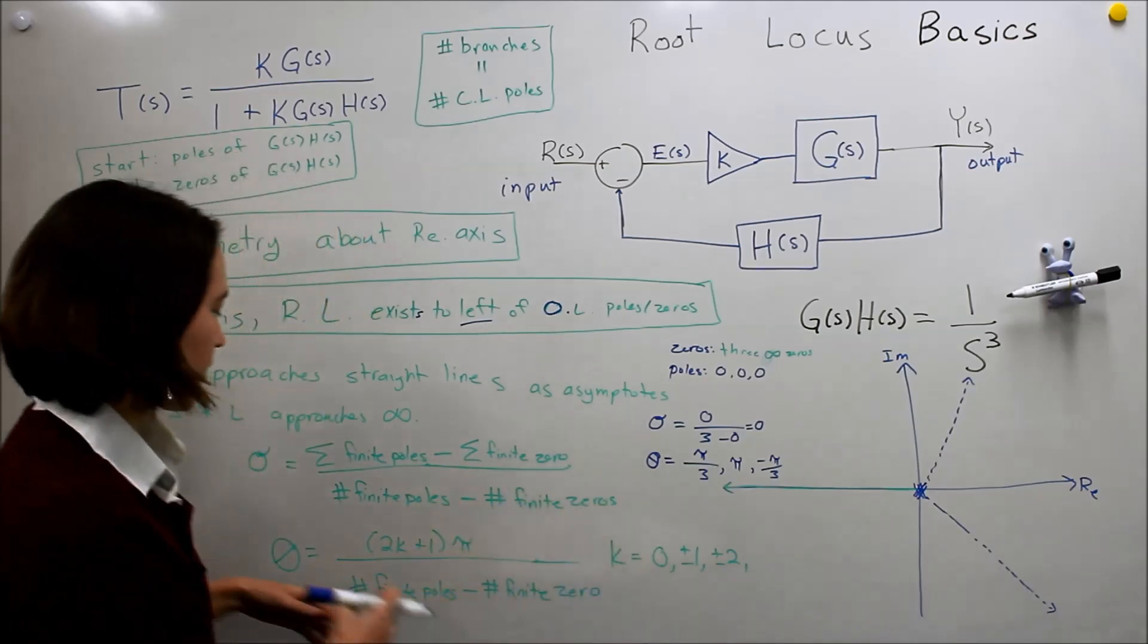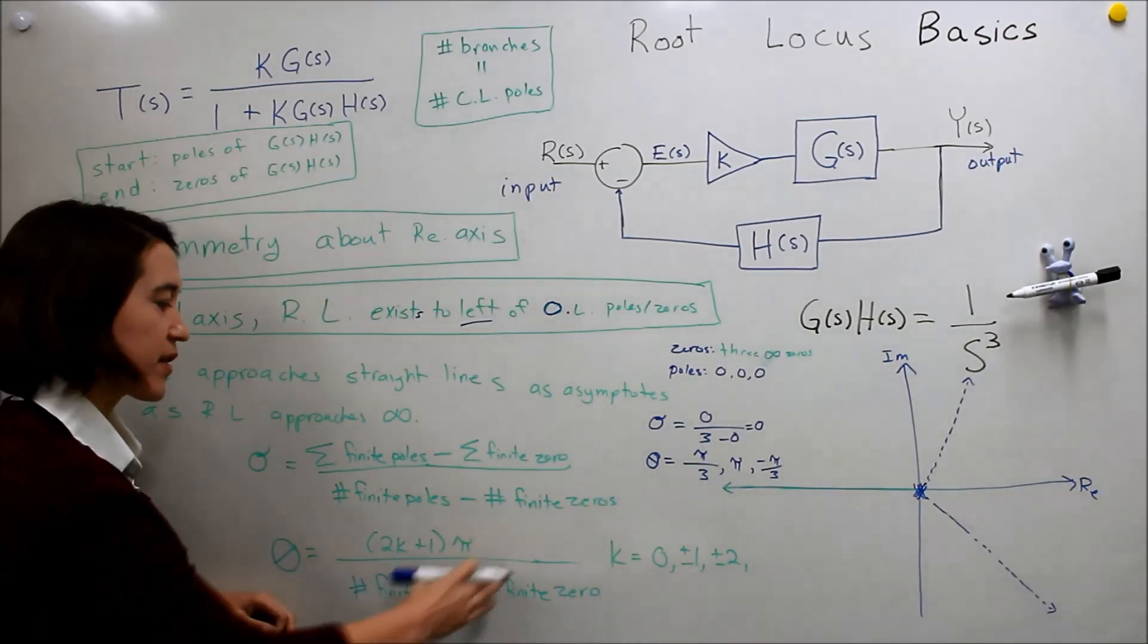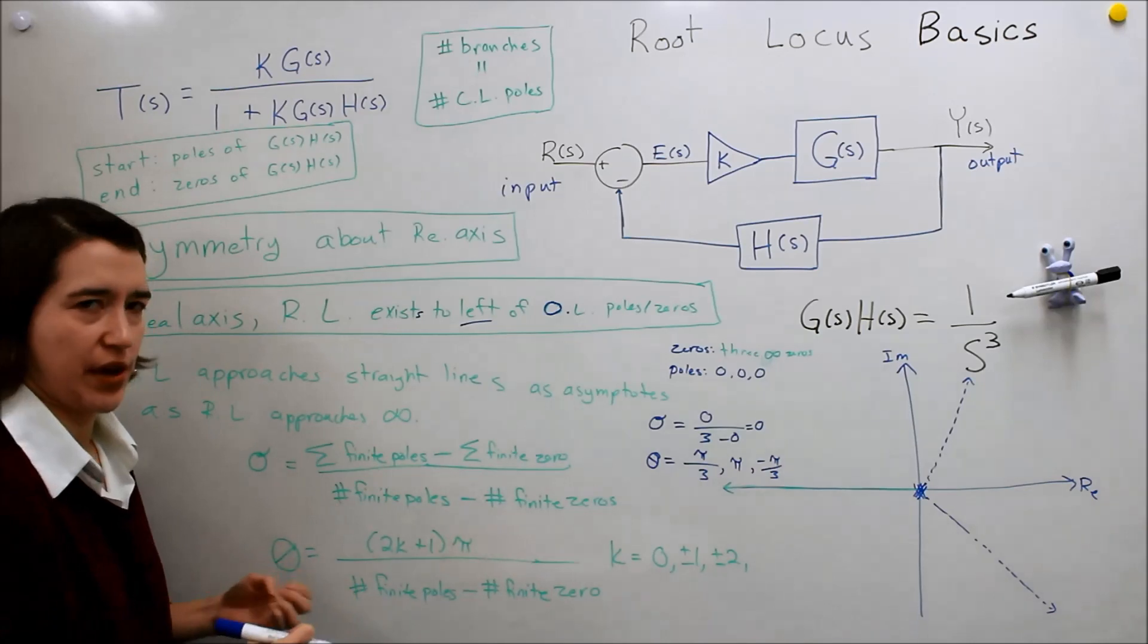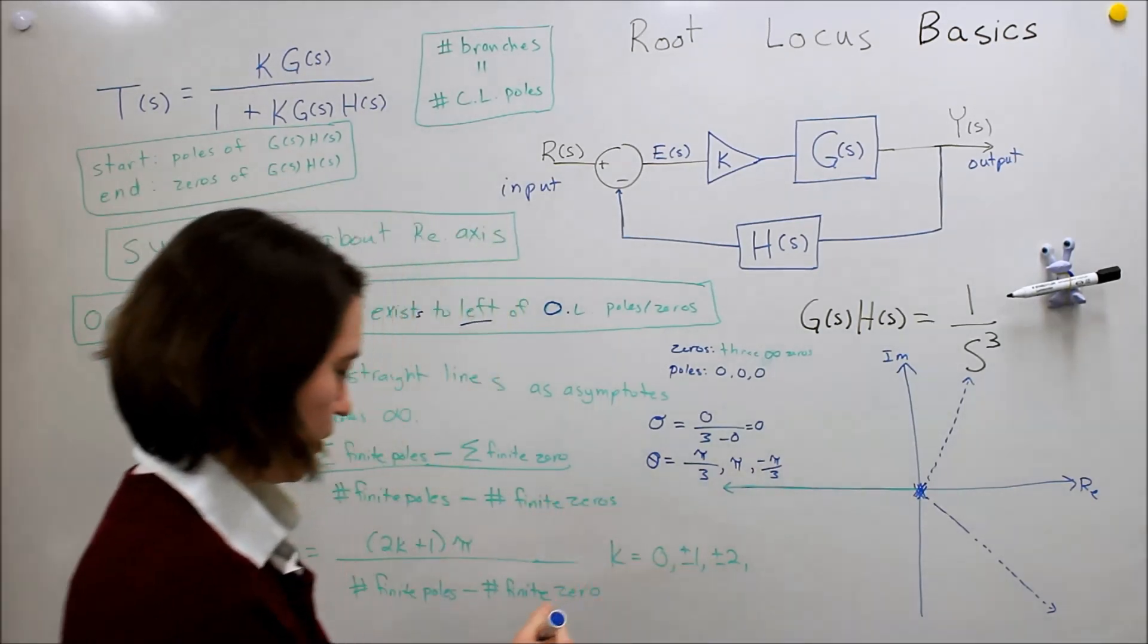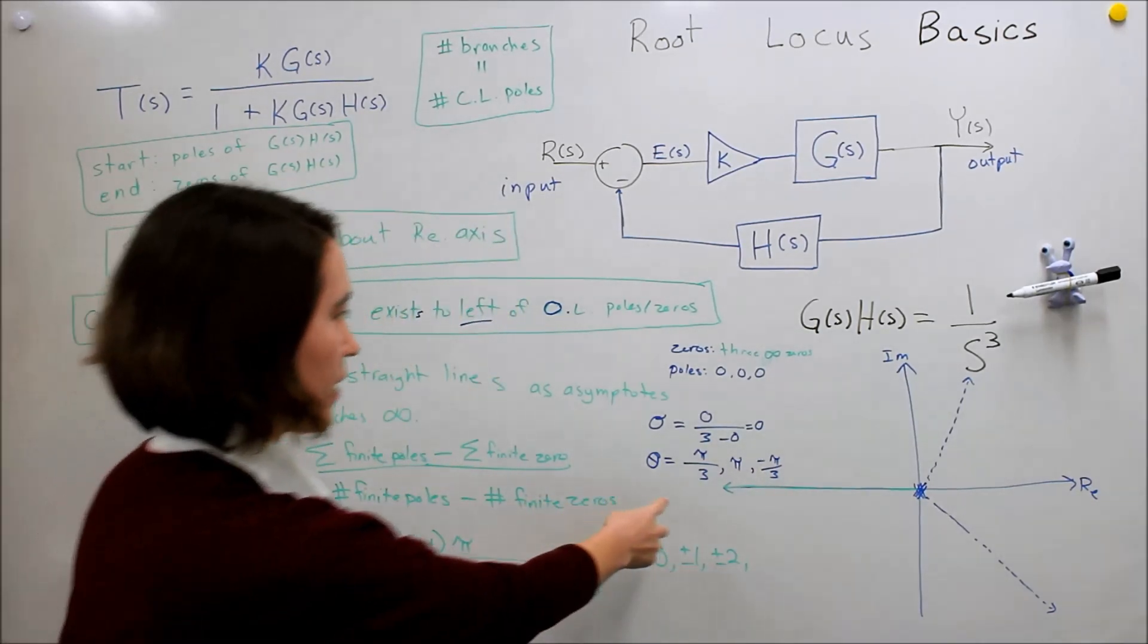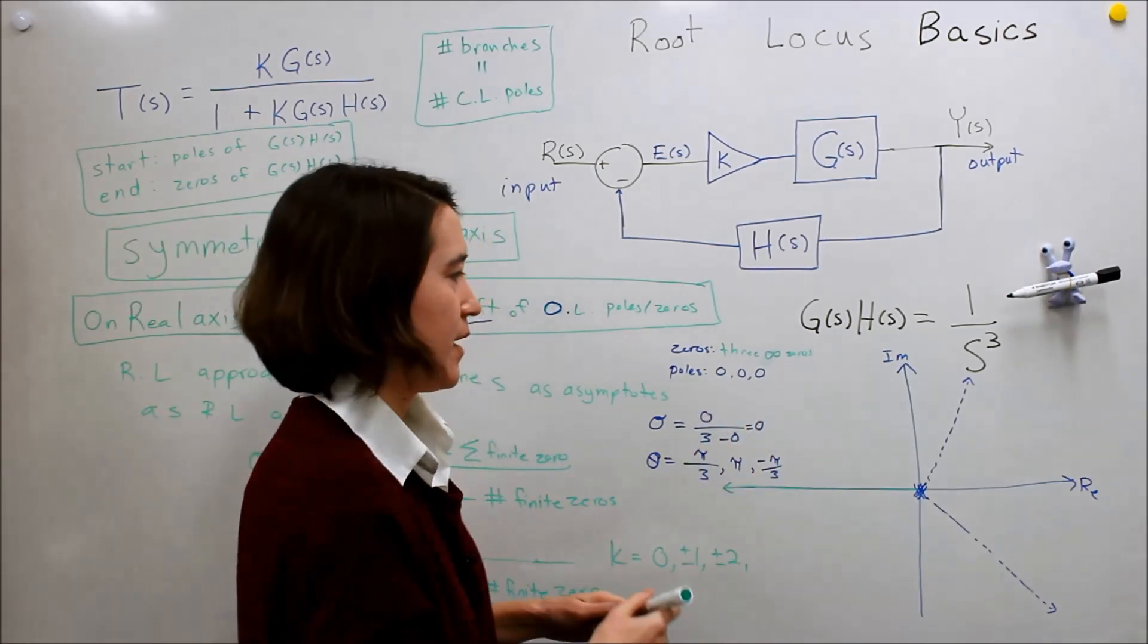And once you do this for a number of different poles, it's always going to be the same. So once you kind of memorize what they are, it will make sense. But here you can calculate them. And so we've calculated all three different asymptotes. And we'll see that each of these poles will go off. One will go in this direction, one of the poles will go off in this direction, and one of the poles will go off in this direction.